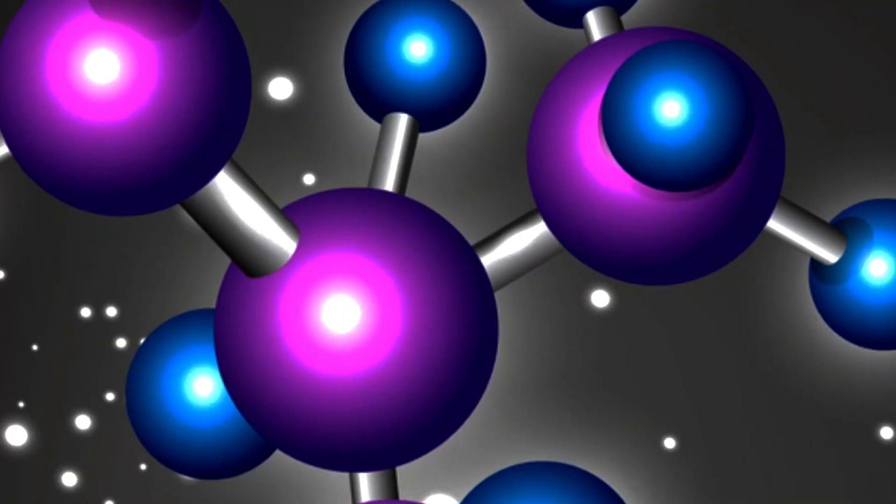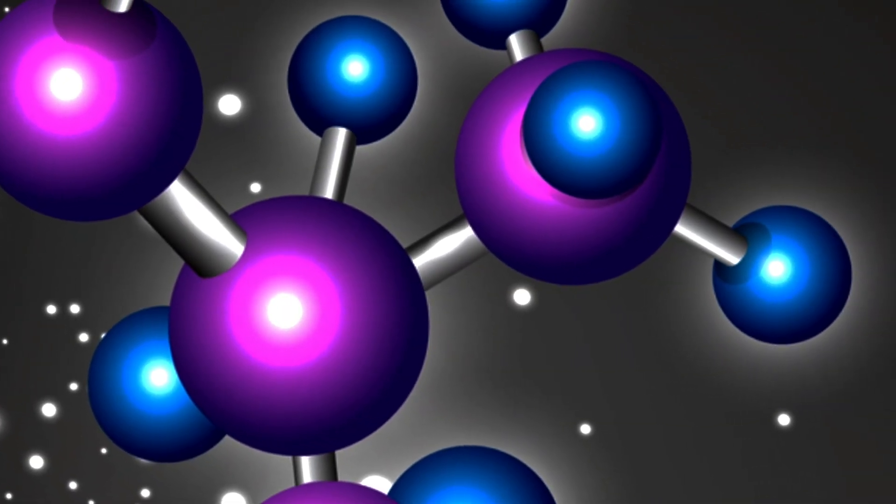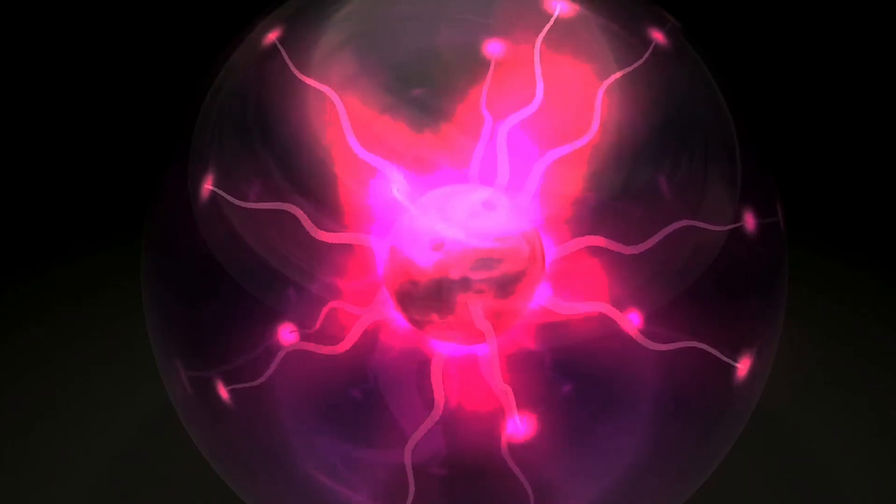With the right atom, one that's unstable against beta decay, the weak interaction can be seen, meaning that all four of the fundamental forces can be probed simply by looking at an atom.